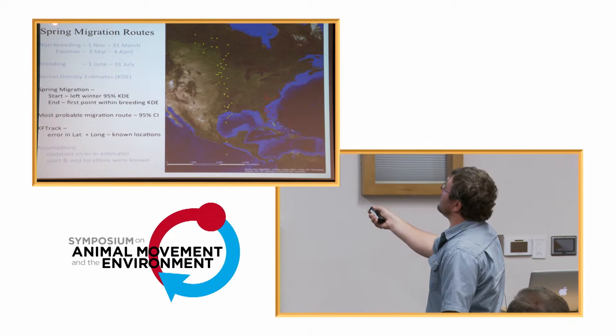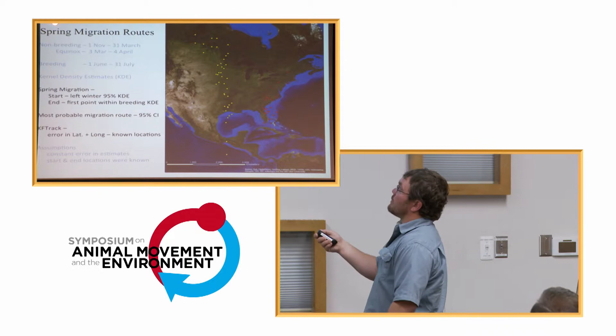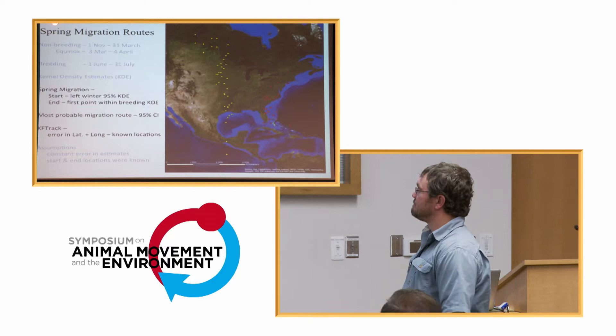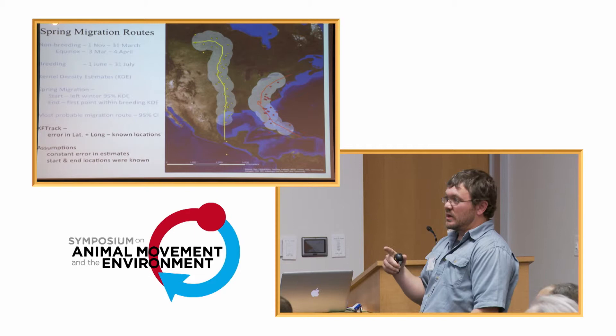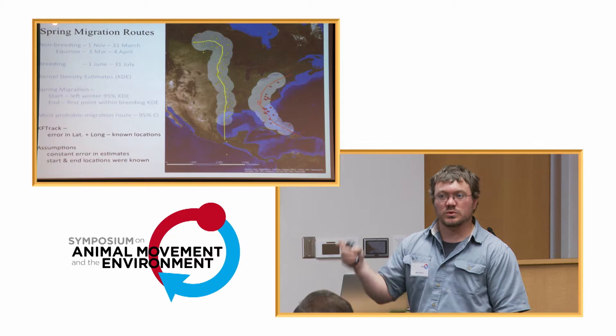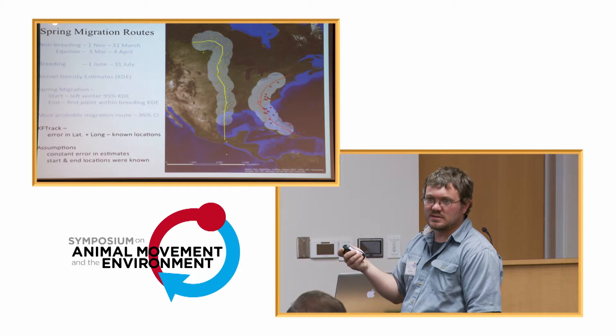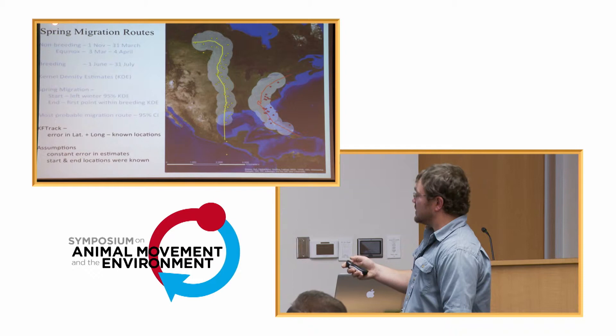From those raw data points we calculated the most probable migration route and the 95% confidence interval around that migration route using KF track, which incorporates error in latitude and longitude from the known locations where the geolocators were deployed. There are a few important assumptions: the error rate in geolocator estimates is constant throughout the year, and that the start and end locations were known. For end locations I picked the middle of the kernel density estimate weighted by the kernel density estimate.